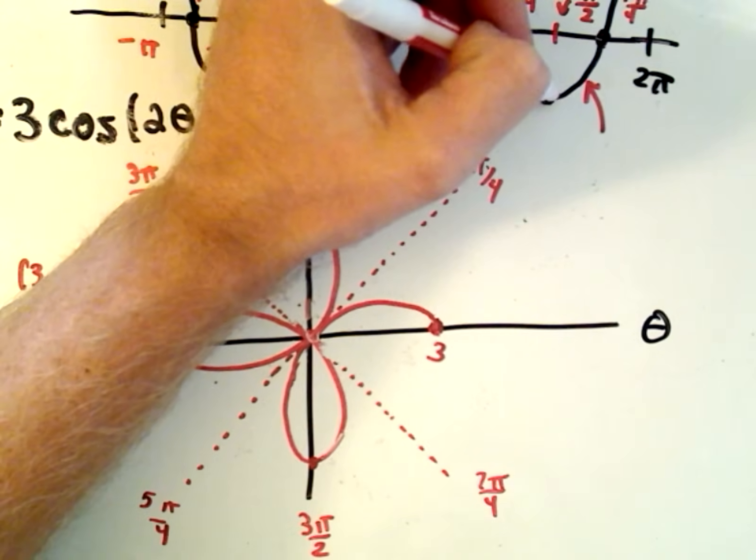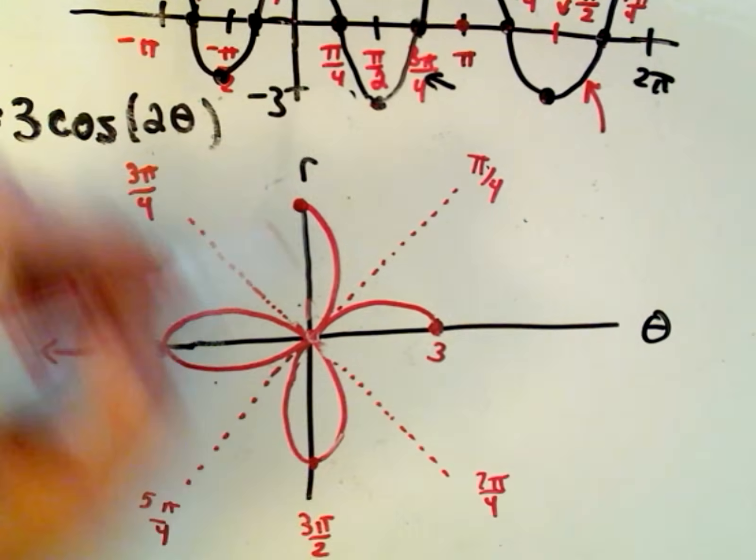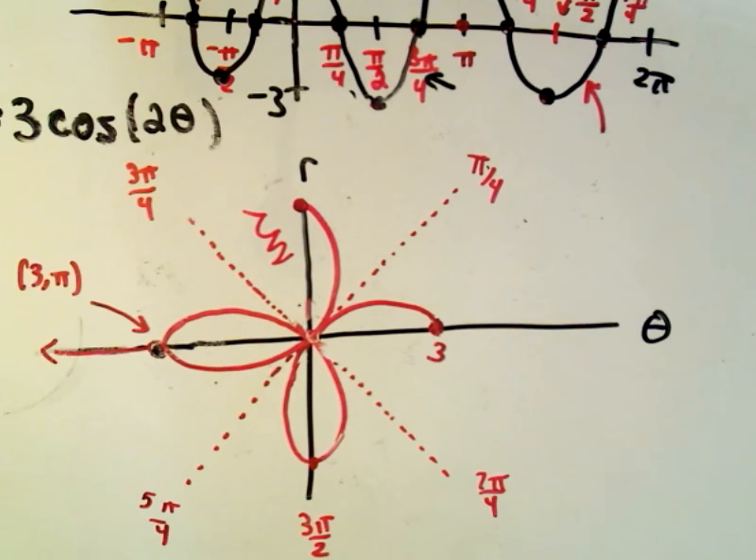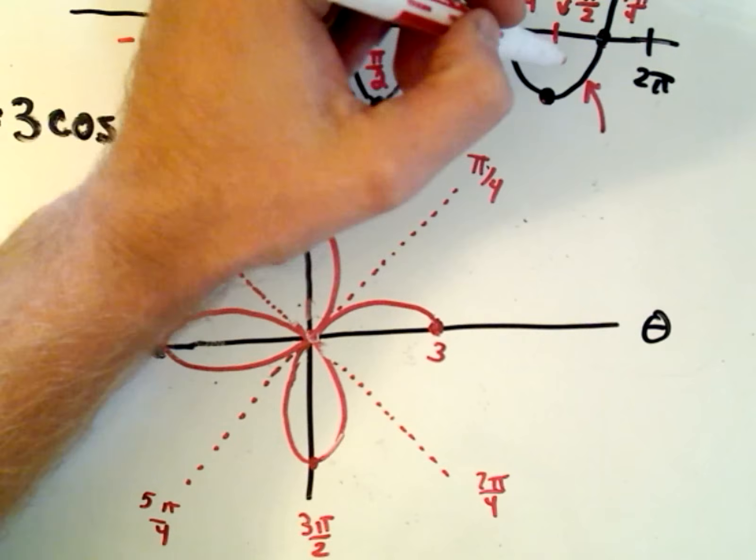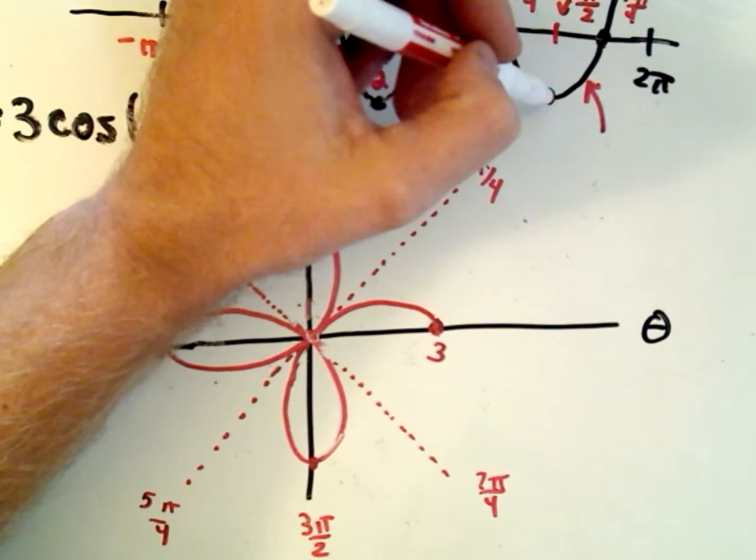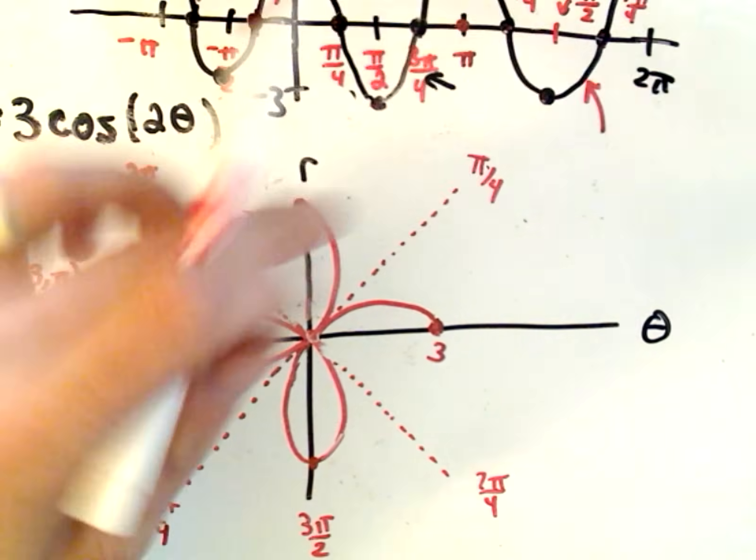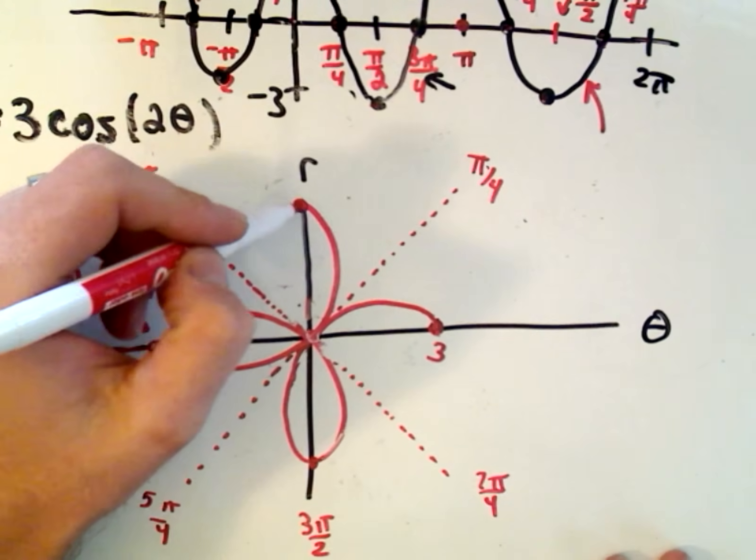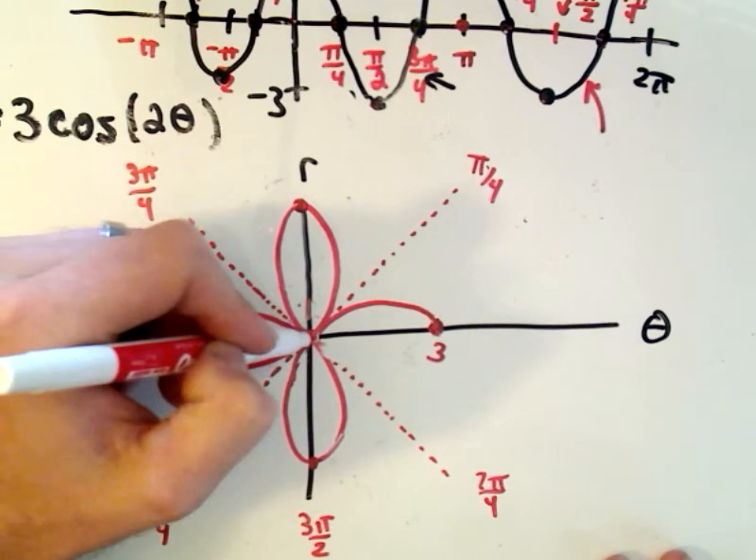Again, the radius is negative, so instead of being in this quadrant, we're going to be up here in this quadrant. Our radius goes from 3 out to 0, so it'll get pulled back in.